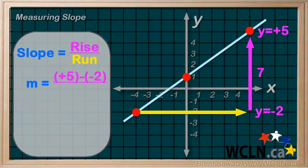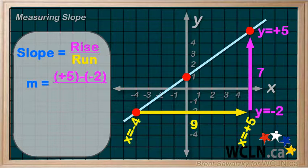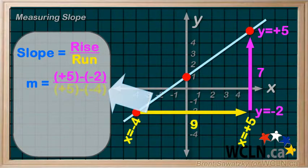For the run, we could also count blocks. Going from negative 4 to plus 5 for a total of 9. Or again, worth noting, we could take our second point's x value, plus 5. And subtract our first point's x value, negative 4. And again, brackets to keep track.